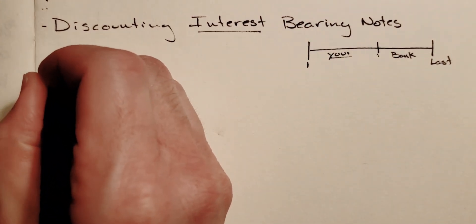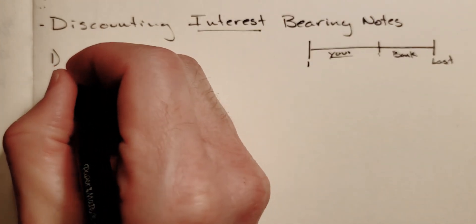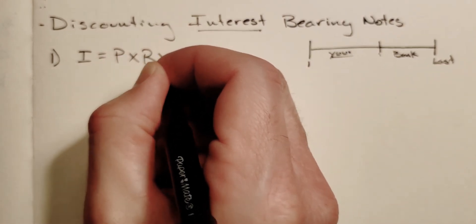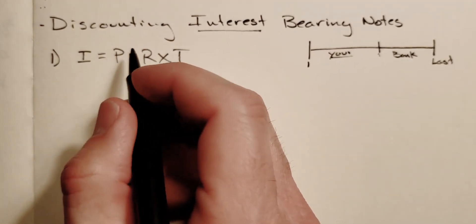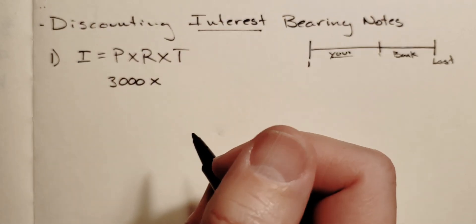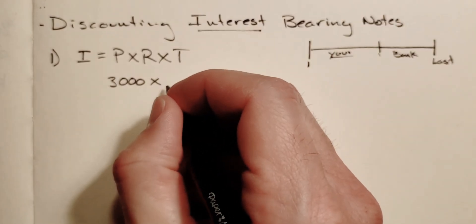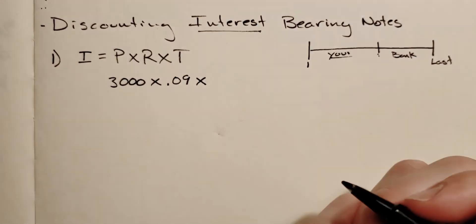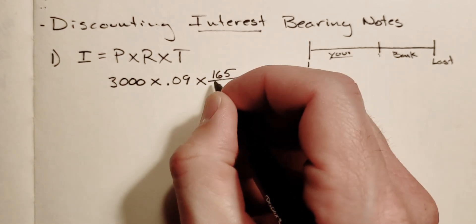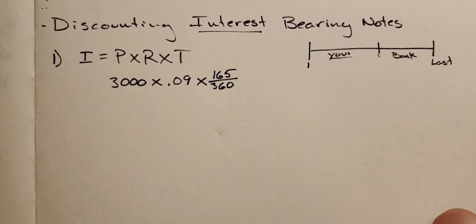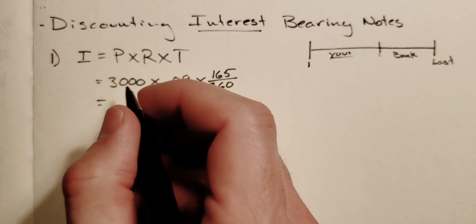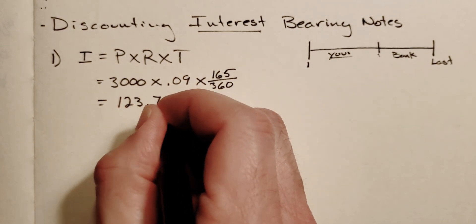The first step, the first thing we're going to do is calculate the interest and maturity value. So like we did in the previous chapter, we're going to have interest equals principal times rate times time. In this case, the face value of the note is $3,000, that's the principal, times the rate is the interest rate, not the bank discount rate, of 9%, times the time which in this case is 165 days out of 360. So basically we'll calculate that all out and we come up with an interest of $123.75.